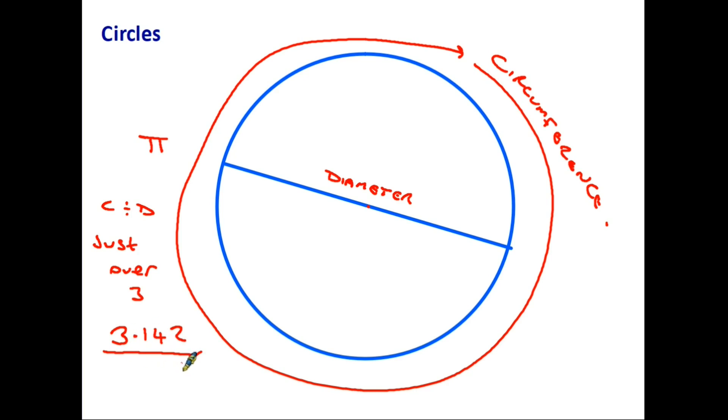Now this takes us to the first of our formulas. If the circumference divided by the diameter is always pi, if we move that round it means that if we multiply pi by the diameter we get the circumference, and that is the first formula. Circumference is pi times the diameter, so once you measure across a circle, if you multiply it by 3.142 you will find the circumference.